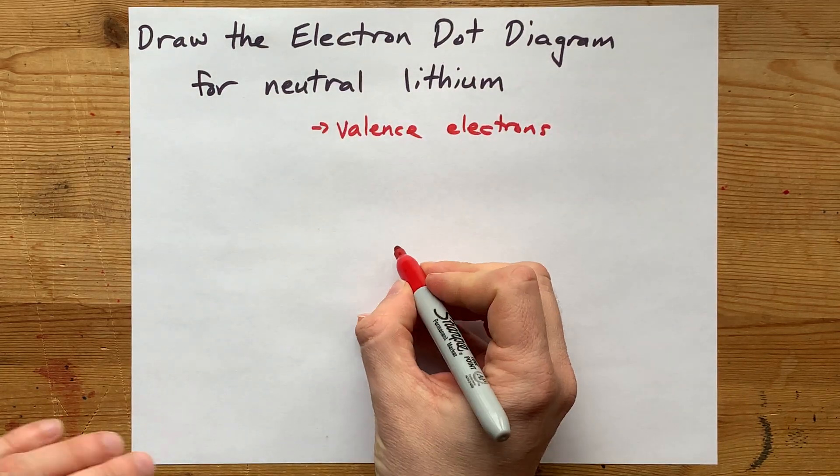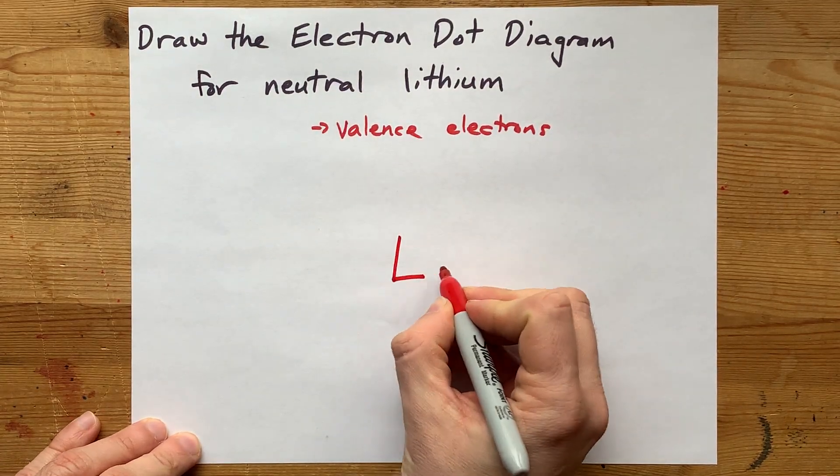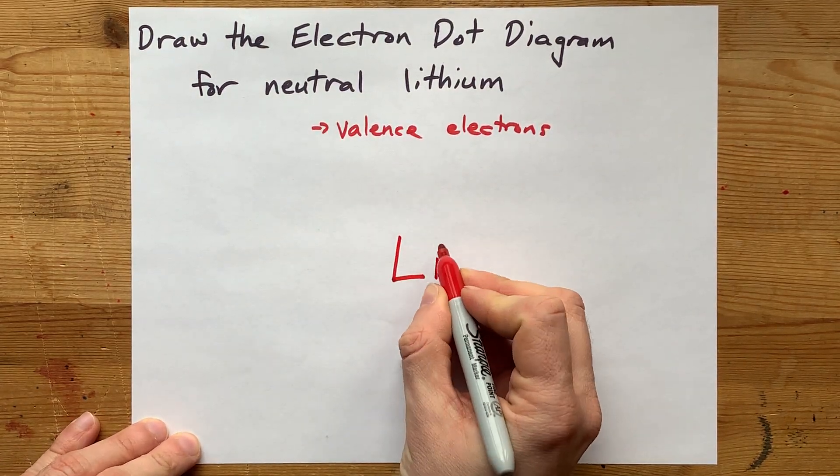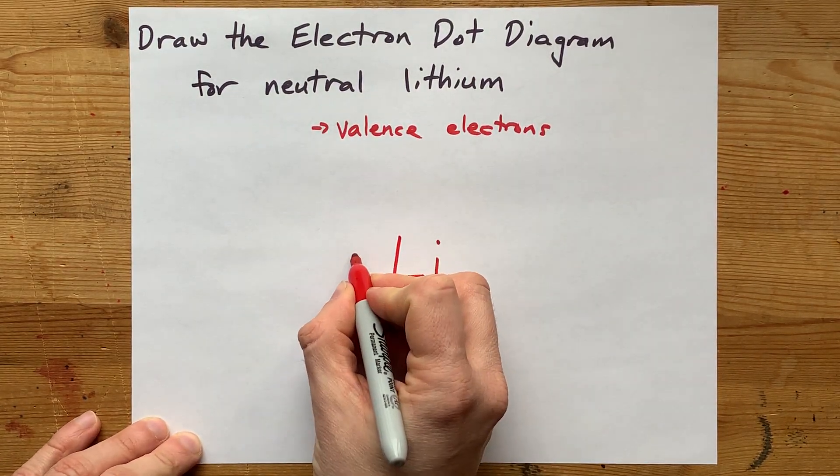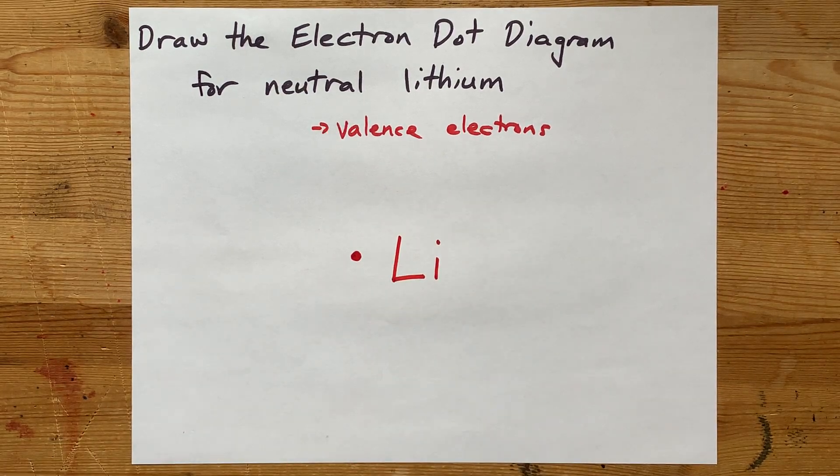The electron dot diagram for lithium, then, is the symbol Li, and then you put a single dot around it.